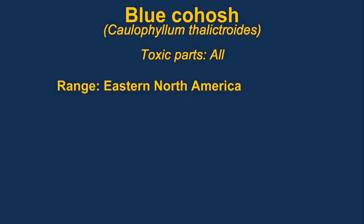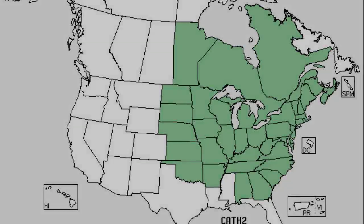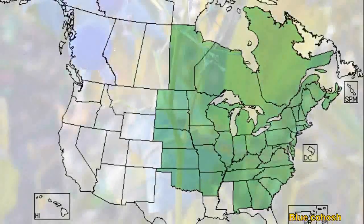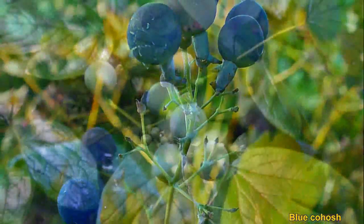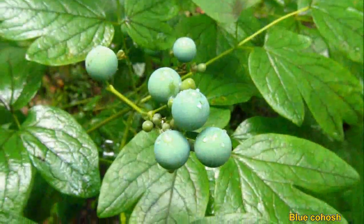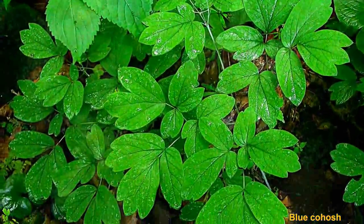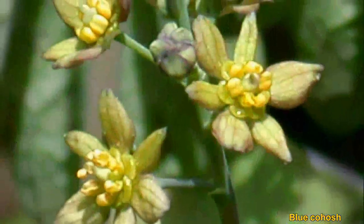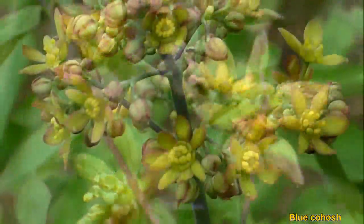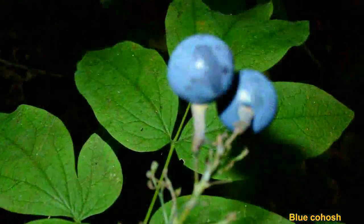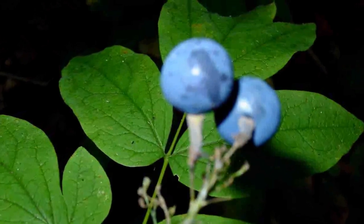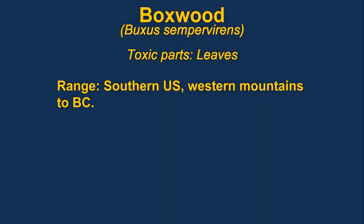Blue cohosh, or squaw root, was used by the Native Americans to induce labor. The berries are sometimes mistaken for blueberries. The leaves and seeds contain methylcytisine, which is an alkaloid that mimics nicotine. Blue cohosh favors hardwood forests, and is generally found on hillsides in shady locations.